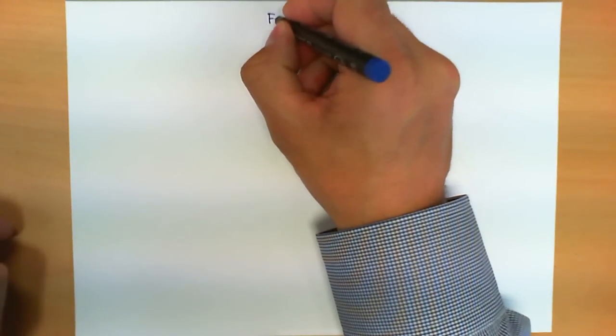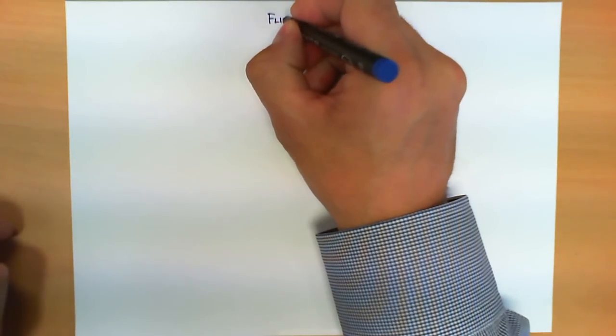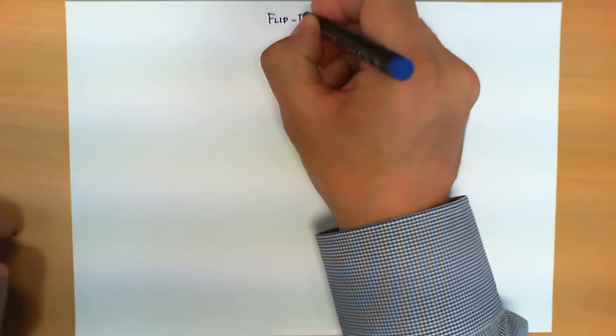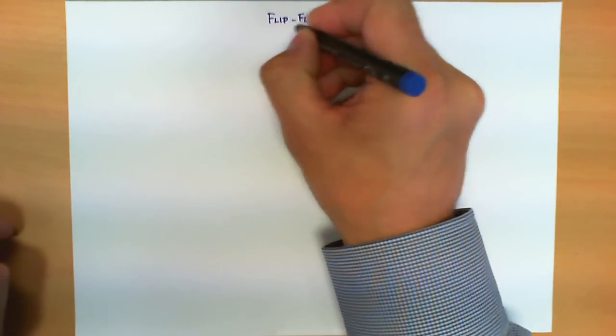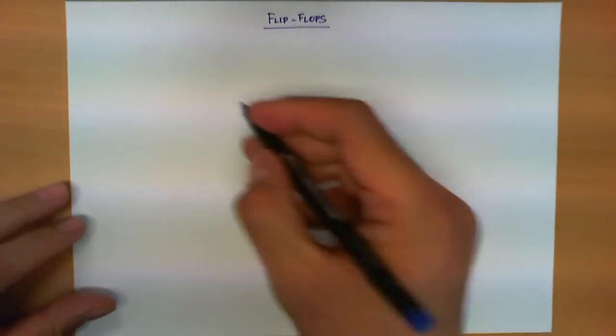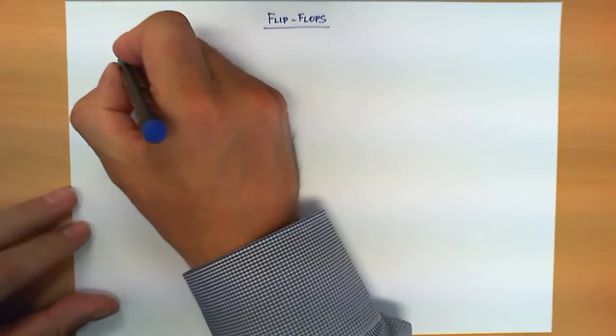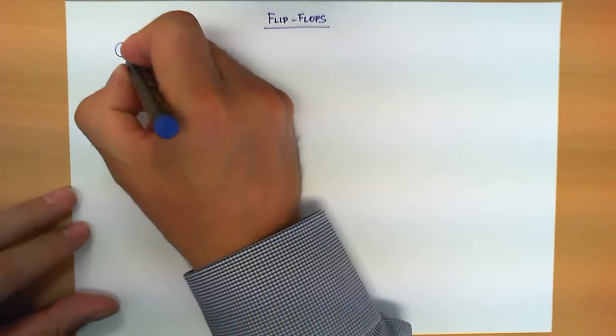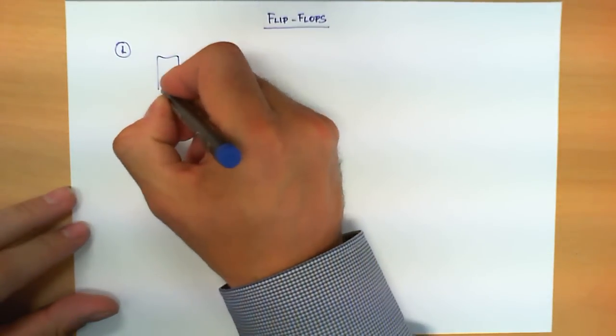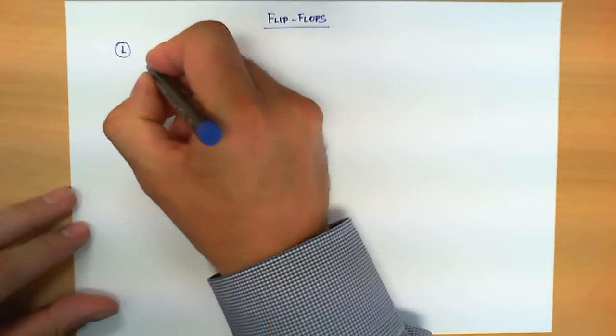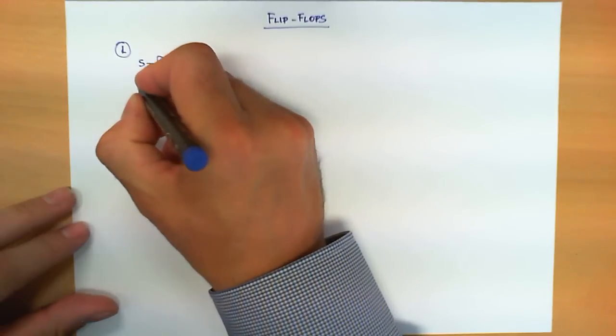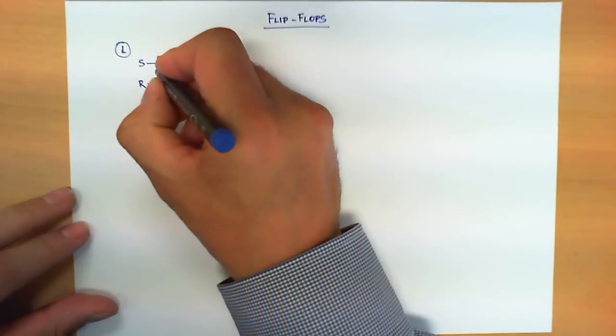In this video we are going to summarize how the digital circuits called flip-flops work. We are going to study three types of flip-flops. The first type is what is known as the SR flip-flop.